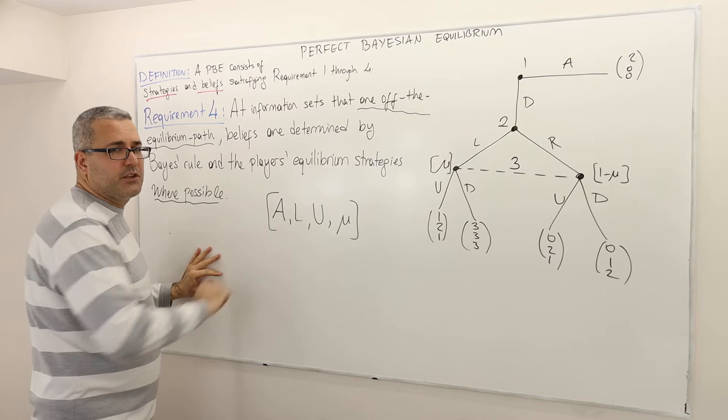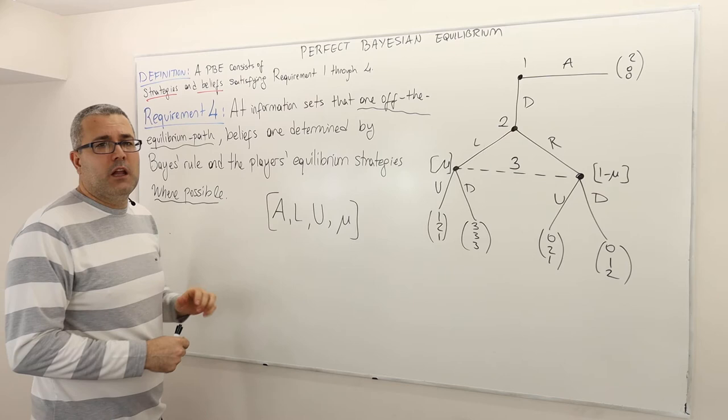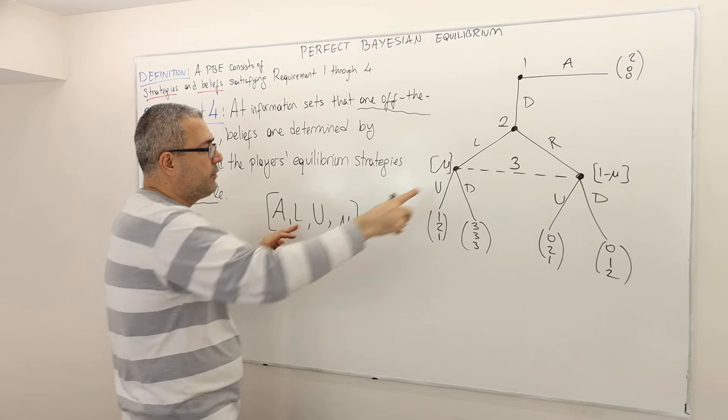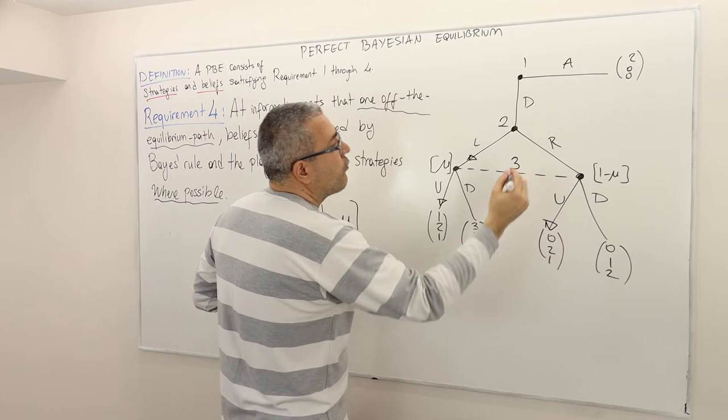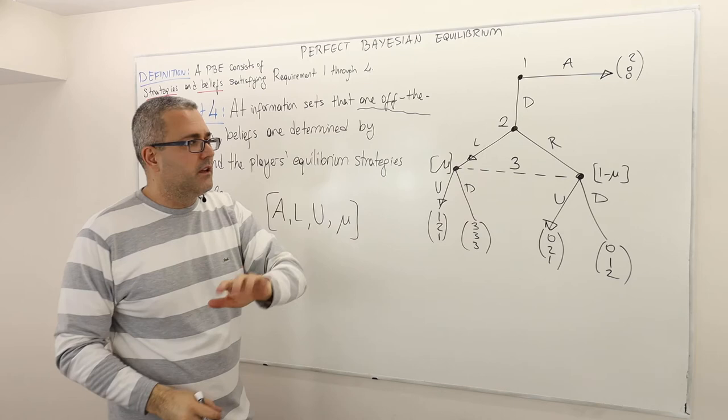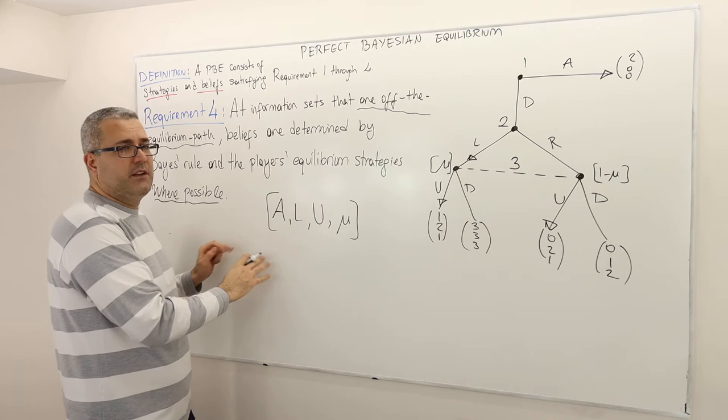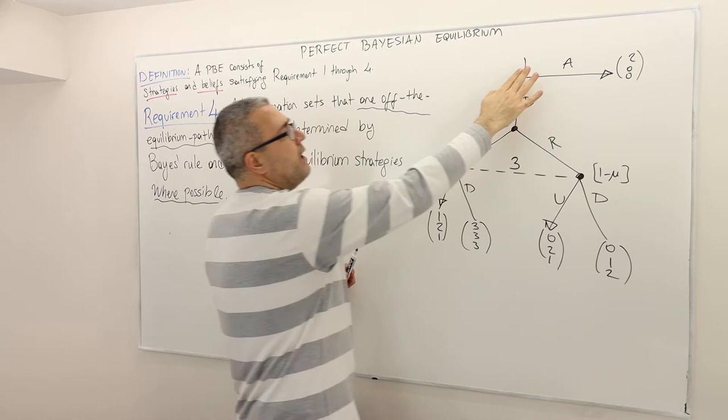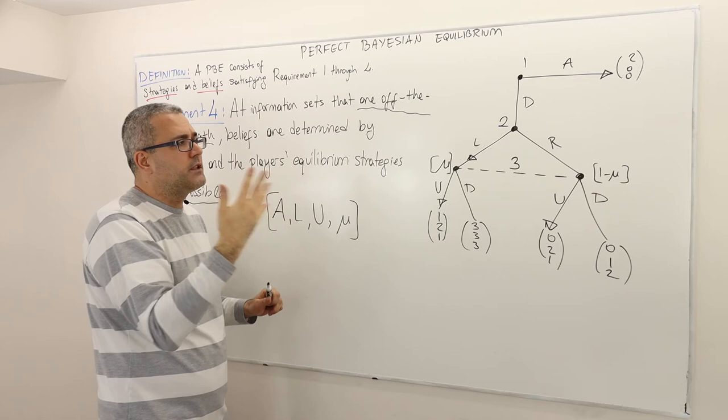Let's consider this strategy profile and ask: does it satisfy requirement three, and if so, for what values of mu? Here, player one plays A and finishes the game, player two plays left, and player three plays U. For requirement four, what player one and two play is important. Since player one plays A with probability one, the information set will not be reached, and so this information set is off the equilibrium path under this strategy profile. The question is: what should be the value of mu?